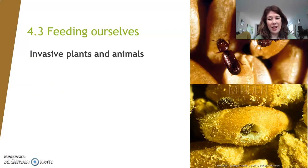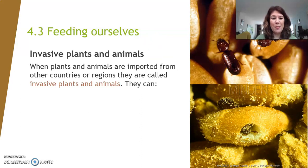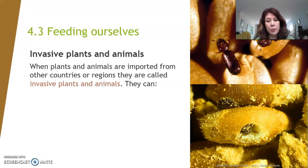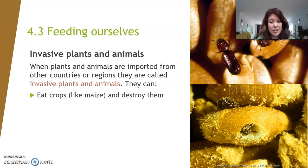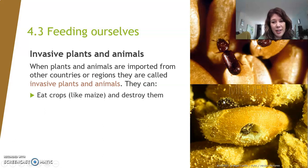So now let's talk about invasive plants and animals. When plants and animals are imported from other countries, they are called invasive plants and animals. They don't really belong to the country they're imported to. For instance, if we import certain insects from Africa and bring them to the Netherlands, those insects would be called invasive animals. Invasive animals are not a good idea if we want to feed ourselves, because they eat the crops and destroy them. You can see a picture here of an insect that gets into the corn — it bores a gate into corn kernels on a corn cob — and you can understand that is not good for the crops.